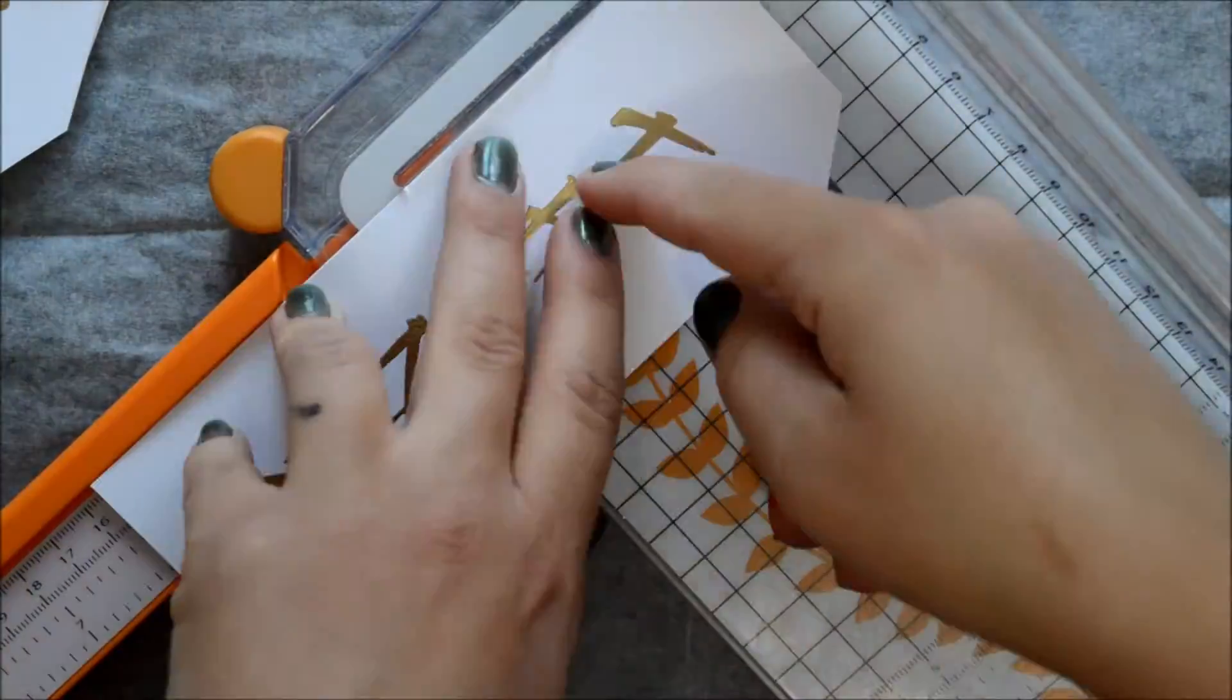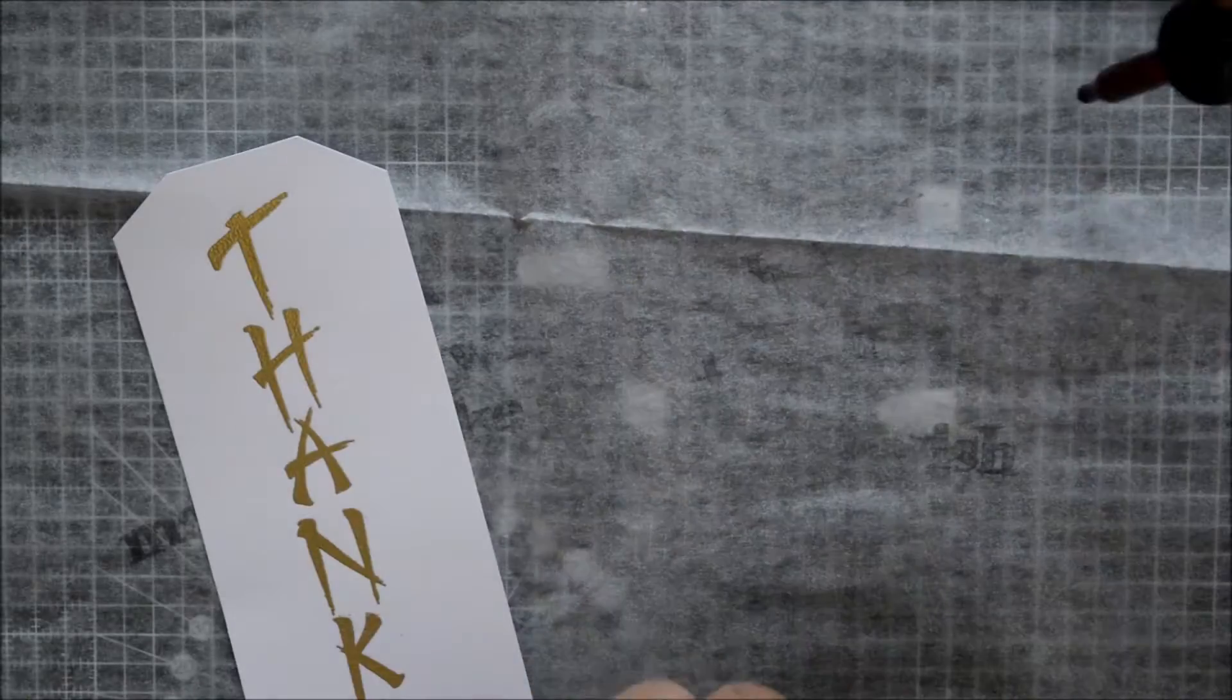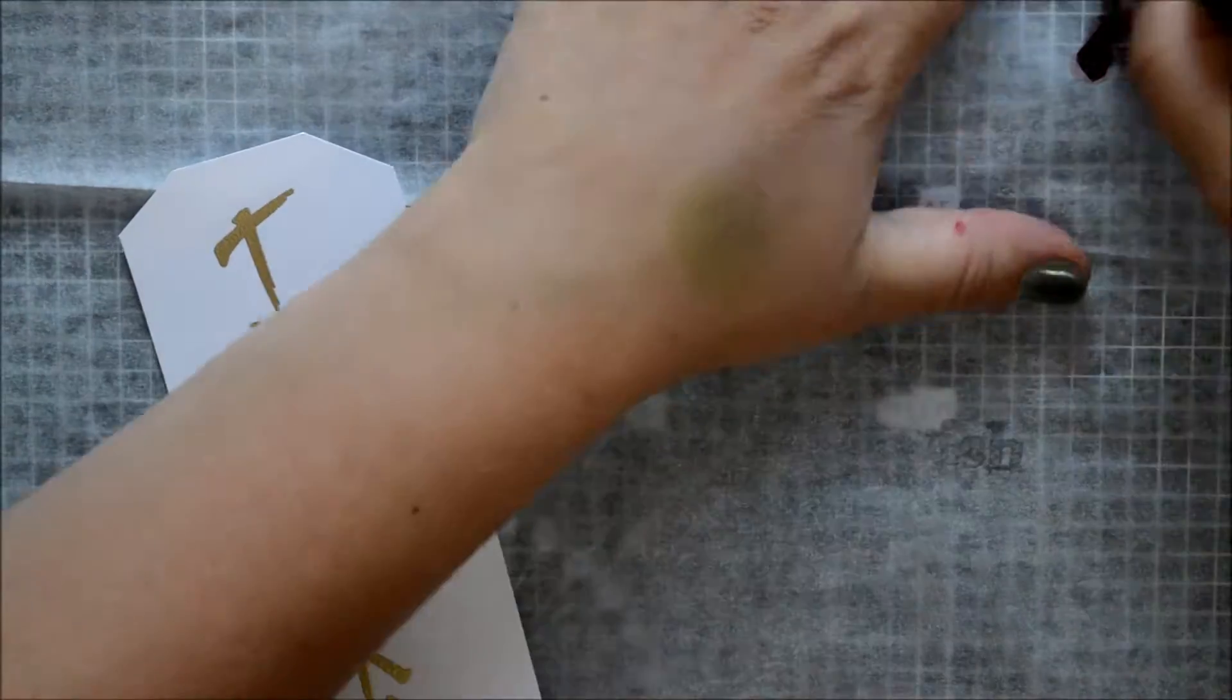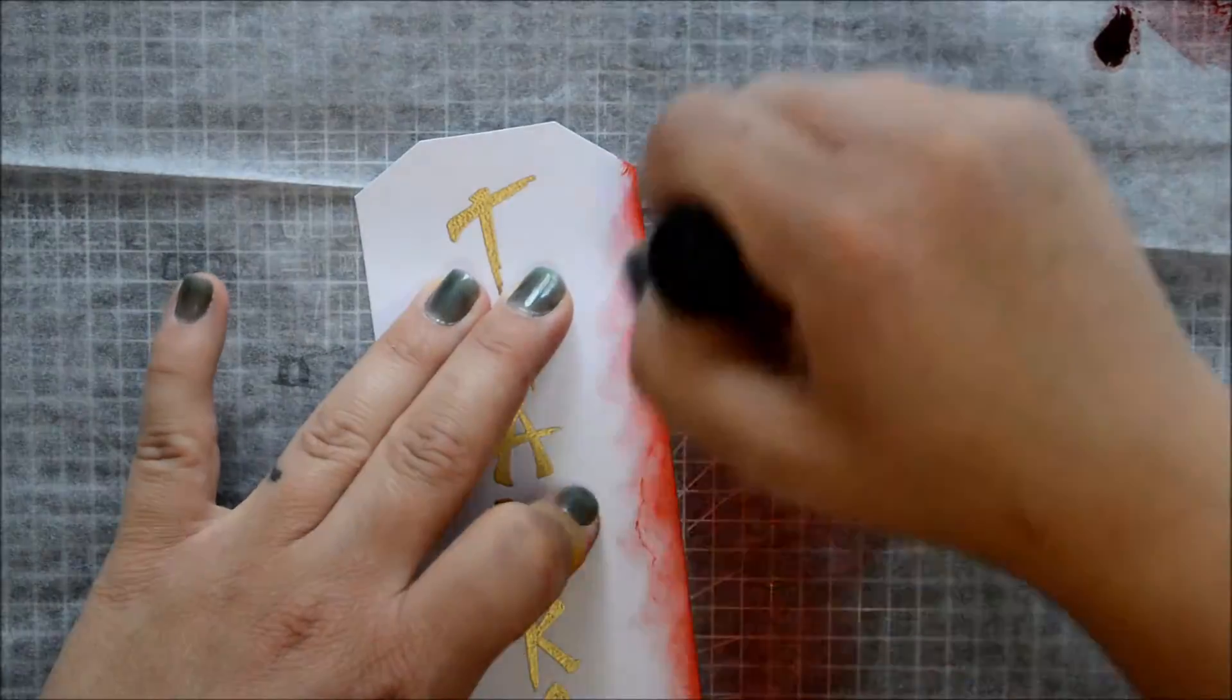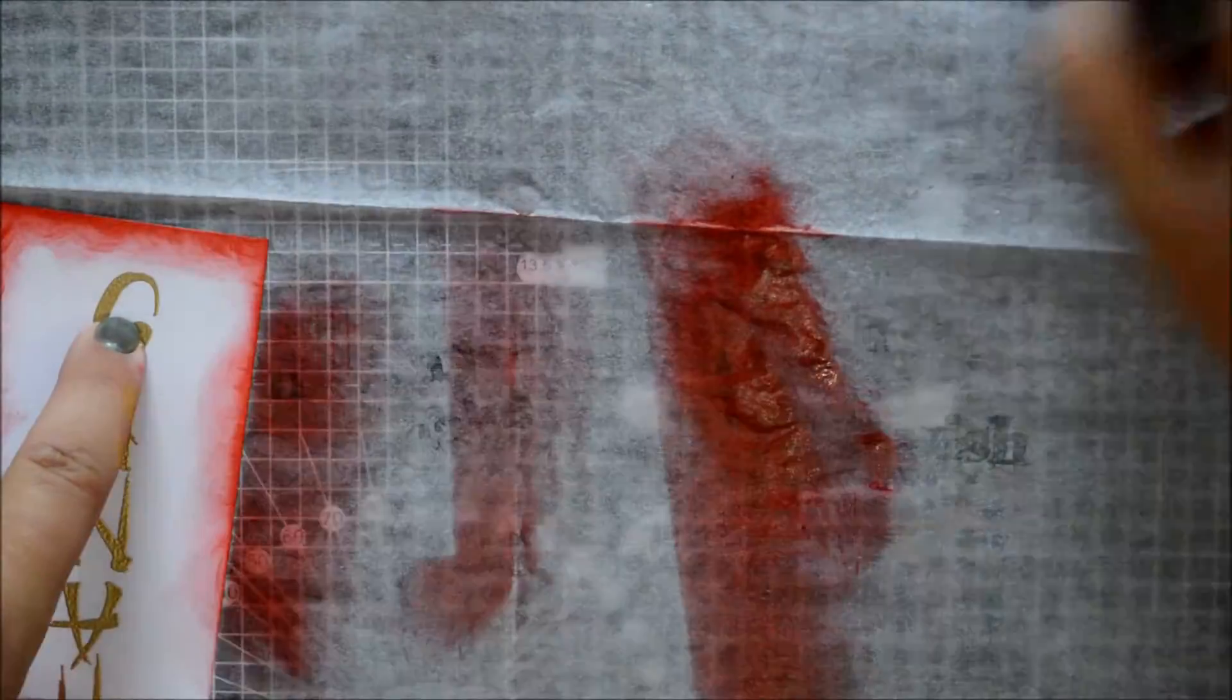I stamped my greeting and embossed it with some Ranger embossing powder, I think it was gold. I used my heat gun to melt the embossing powder and then I trimmed my bookmarks so they would fit into my Memory Box plastic sleeves to use my fuse tool.